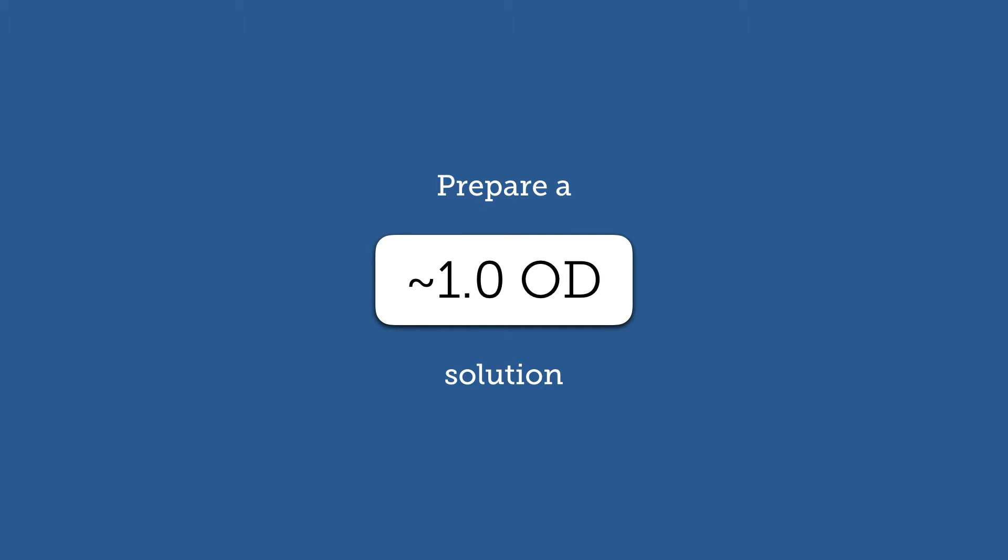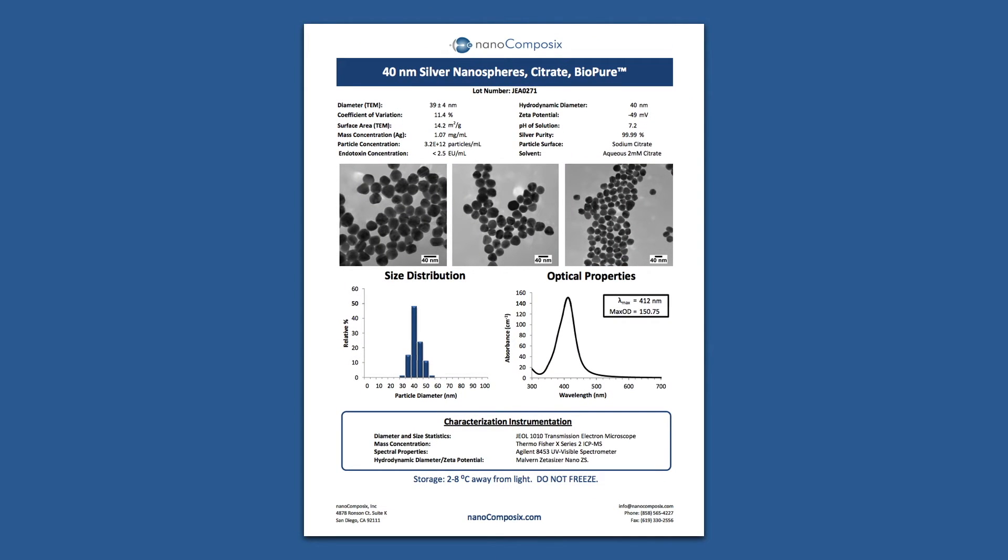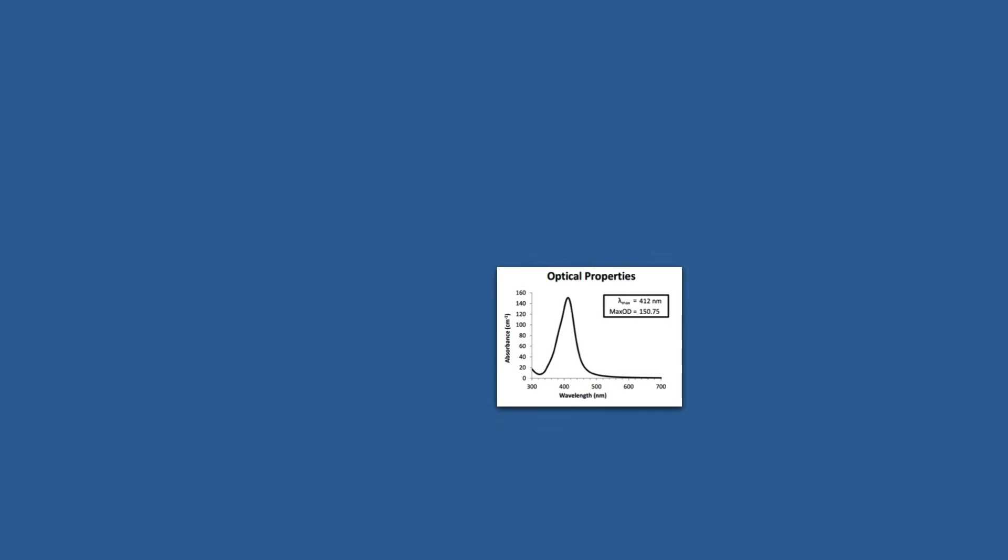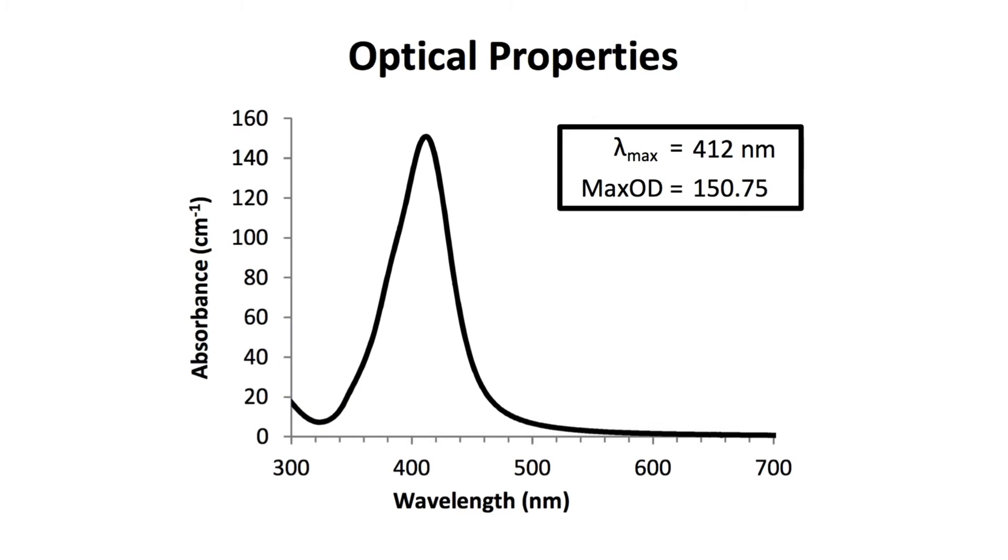It's quite straightforward if the absorbance is known. For example, all of our nanomaterials come with a certificate of analysis which includes the optical properties such as peak wavelength and absorbance. So if the reported optical density of the material was 150 you'd need to prepare a 150-fold dilution. In this case you need to measure out 100 microliters of the nanoparticle solution and bring it up to about 15 mils with water.